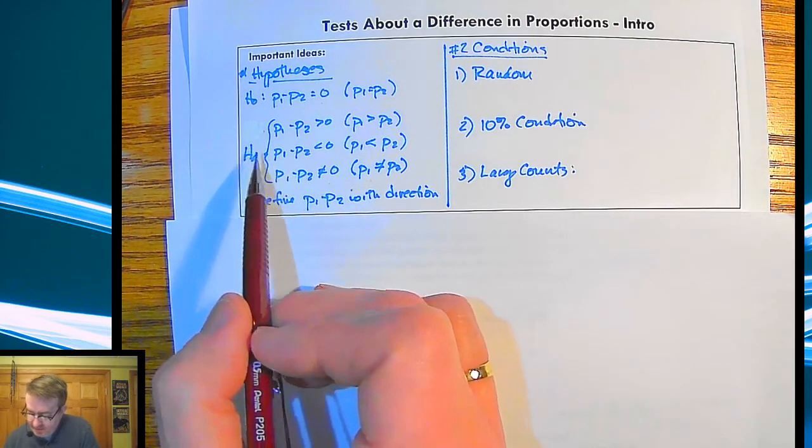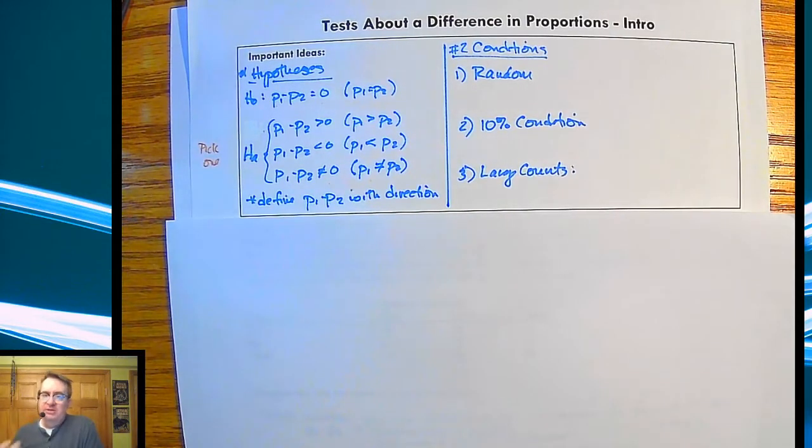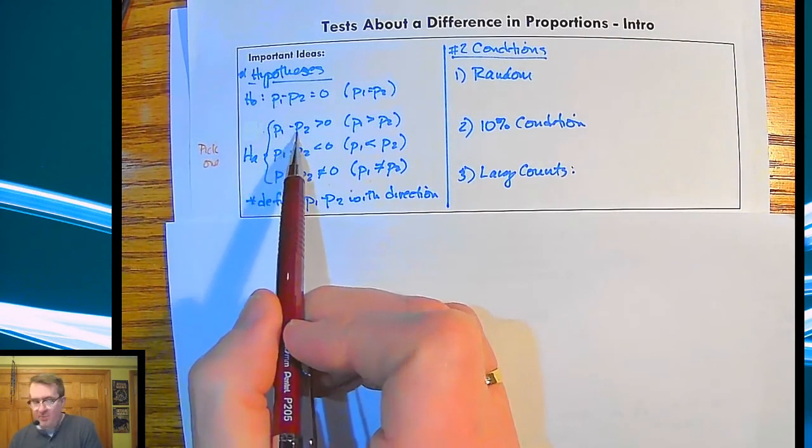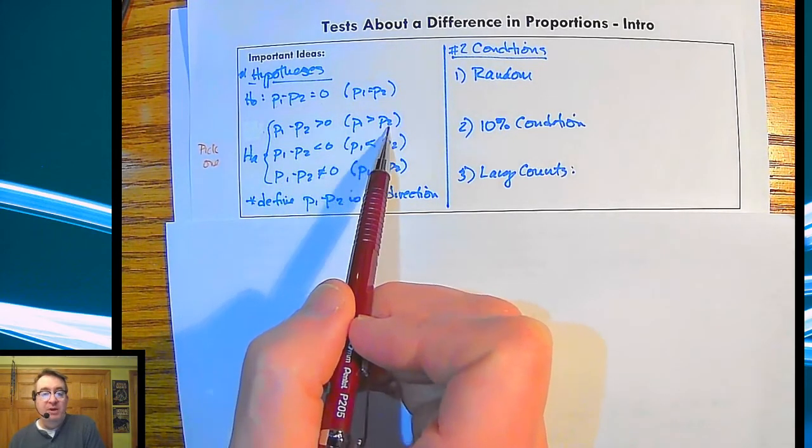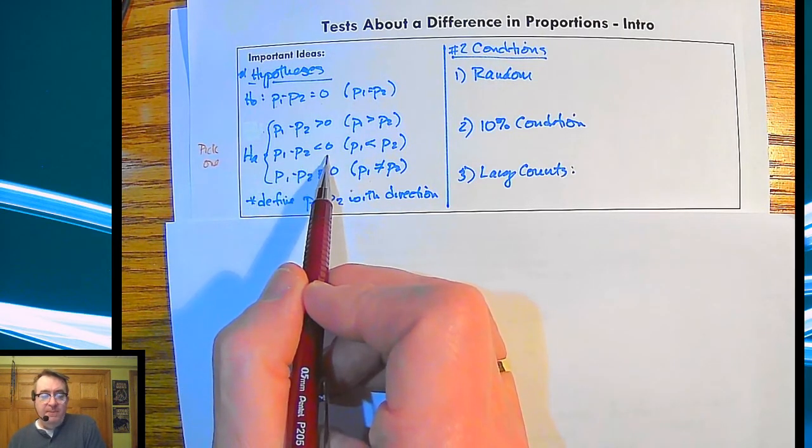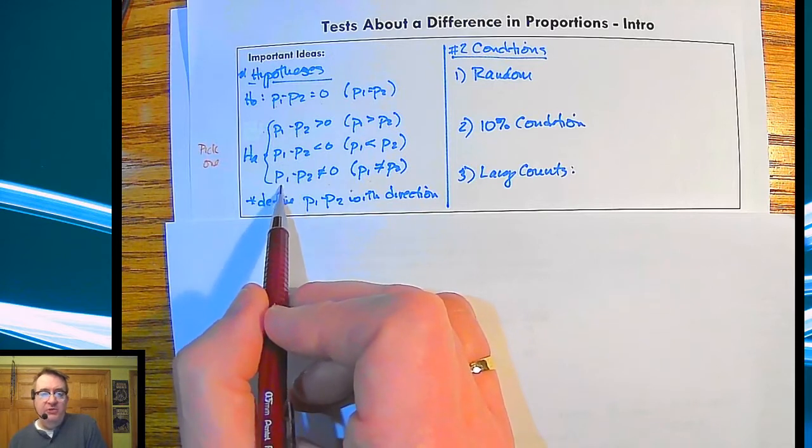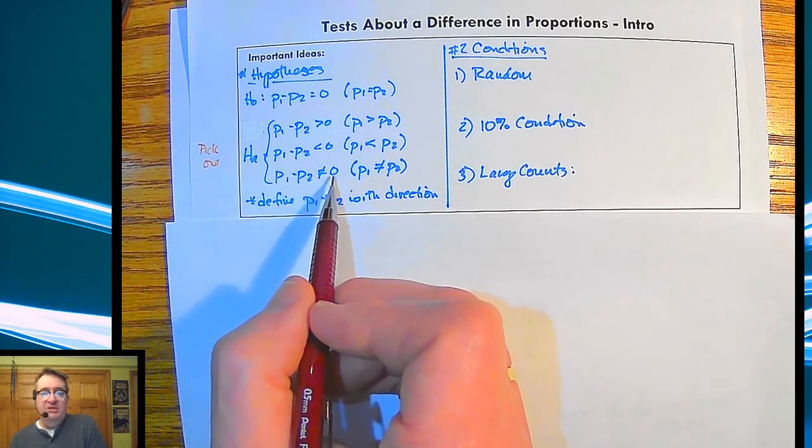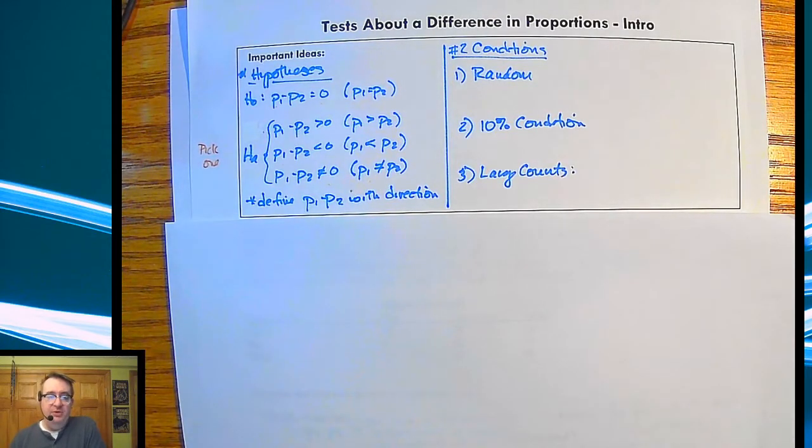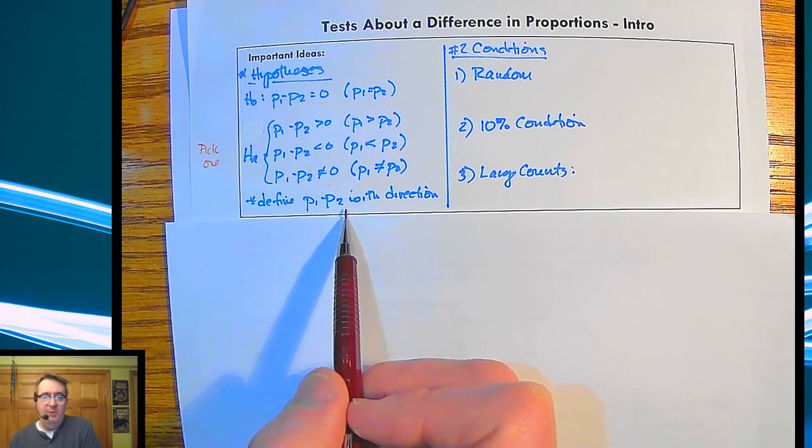In terms of your alternative hypothesis, you're going to generally pick one of these. We're laying out all three options here. One would be that P1 minus P2 is bigger than zero, which means the first proportion is bigger than the second. P1 minus P2 is less than zero means P1 would be smaller than P2. And then you could do a two-tailed one where P1 minus P2 is not equal to zero. The whole point is that you need to define P1 minus P2 with a direction.